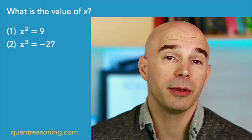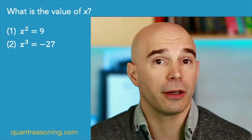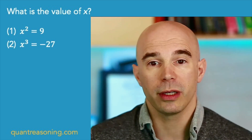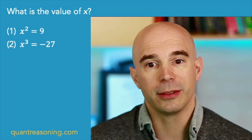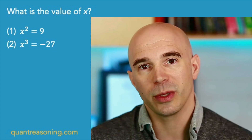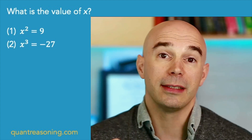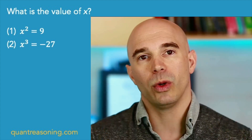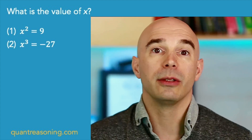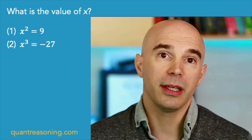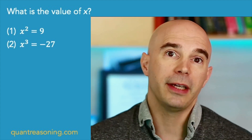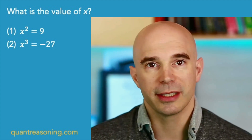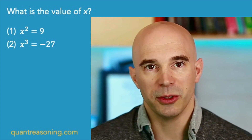That can't happen on the GMAT. So again, it's an opportunity to catch our mistake, go back, check our work, and realize: if X squared is nine, that means X is either three or negative three. Statement one now allows for the possibility of negative three, and that is of course possible in the context of statement two.